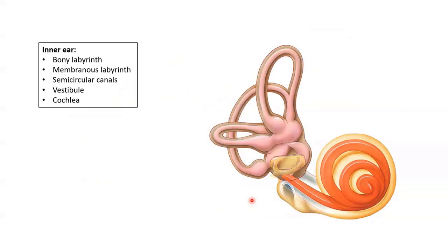The inner or internal ear is also called the labyrinth, and it sits deep within our temporal bone. It connects to the middle ear via the membrane that covers the oval window. Structurally, the inner ear consists of two parts: an outer bony labyrinth, which is this dark brown part here and also the yellow part on this side, and an inner membranous labyrinth, which is the pink and orange parts.